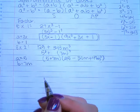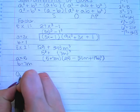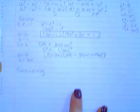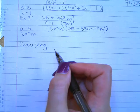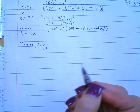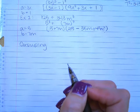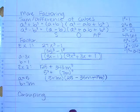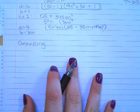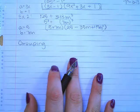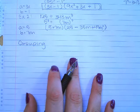Next we have another type of factoring, and that is factoring by grouping. Factoring by grouping is what you do when you have four terms. We've looked at what happens when we have two terms — that's typically GCF or difference of squares, or now sum and difference of cubes. We know when we have trinomials those are diamond problems or slide-divide. And now when we have four terms, we're going to factor by grouping.